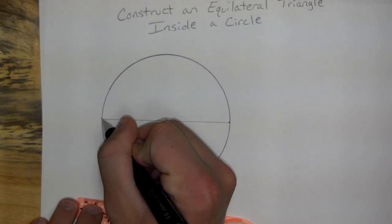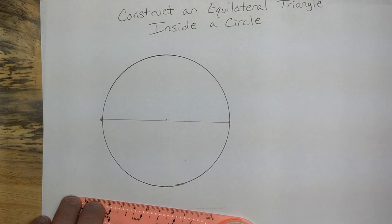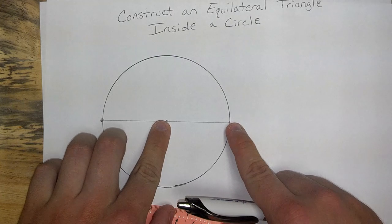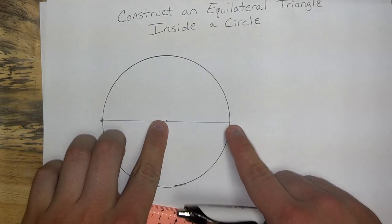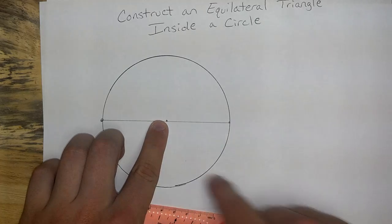Okay, this end point over here will be one of the vertices of my triangle. Except now, here comes the fun part. This little segment right here, use this as the radius for another circle and create a circle over here.